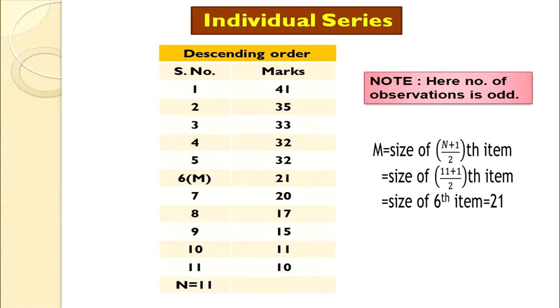We can also arrange the data in descending order. The formula remains the same: Median = size of (n+1)/2 th item. With n = 11, (11+1)/2 gives the 6th item. Locating the 6th value in descending order again gives 21 marks. So we have learned how to compute median where the number of observations is odd.